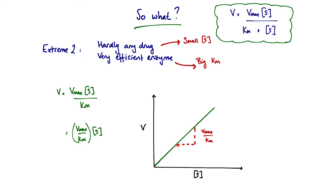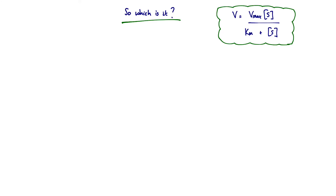The gradient of this graph is given by Vmax over Km. The important point is that now we have dependency of the rate of reaction on substrate concentration — this is now demonstrating first order kinetics. But for any given system, is it first order or zero order kinetics? The Michaelis-Menten equation gives us a nice way to explain that it can be both.